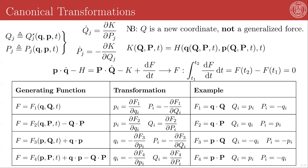Assuming that these two are invertible, we should also be able to write functions for the original generalized coordinates, the lowercase Q sub j's, as functions of capital Q and capital P in time, and similarly, functions of the original conjugate momenta, the lowercase p's, as functions of capital Q and capital P in time.